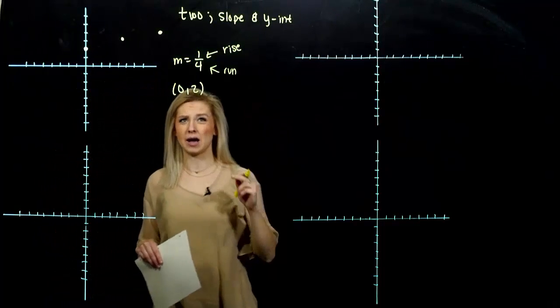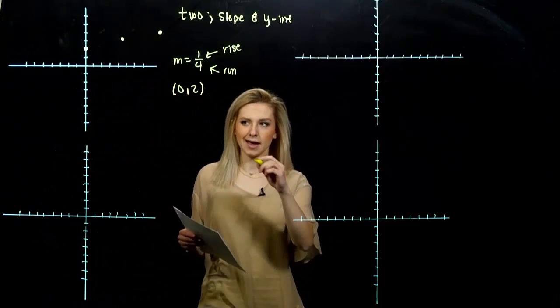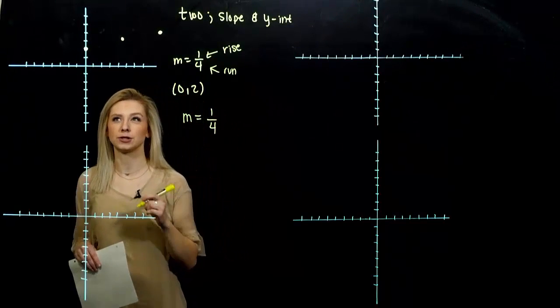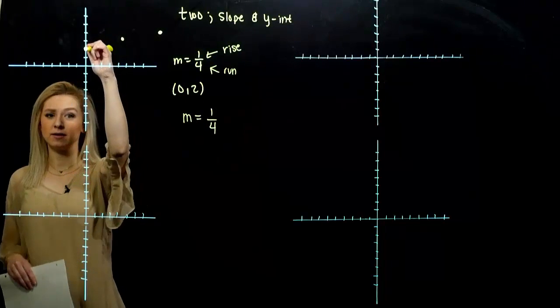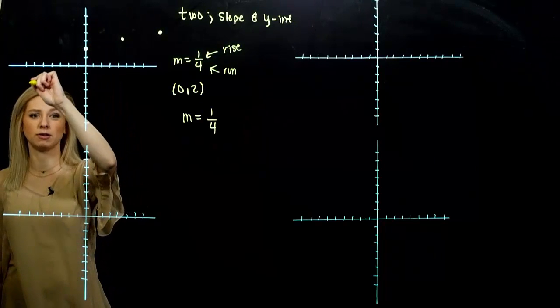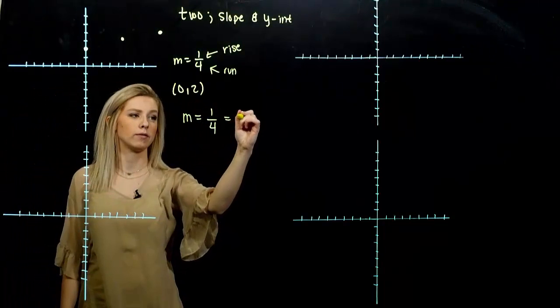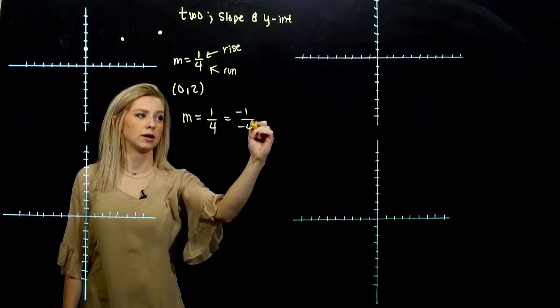My other option for the slope, since I have positive slope, what are my other options? I'm also going to have points on the line that fall down here. According to the slope, what else could we do? What's equivalent? Negative one over negative four.